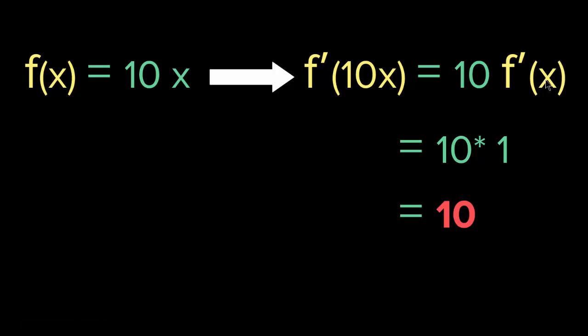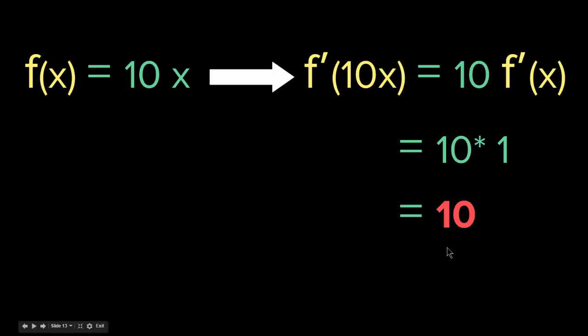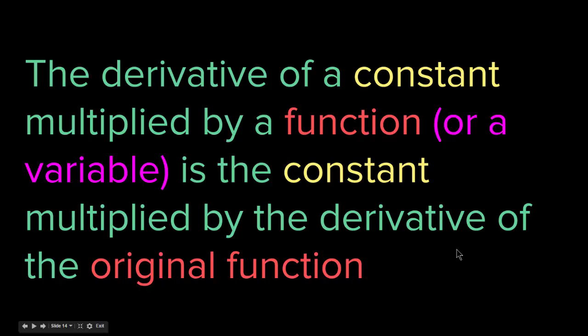In the later rules, we will see how, if this variable has a power, we deal with that. But currently, with power equal to 1 and a constant, we take the constant out, take the derivative of the variable, and multiply — giving us the derivative of the function. As you can see, the derivative of f of x equaling 10x is 10. So the derivative of a constant multiplied by a function is the constant multiplied by the derivative of the original function. This is the constant multiple rule. Let's see the third rule.